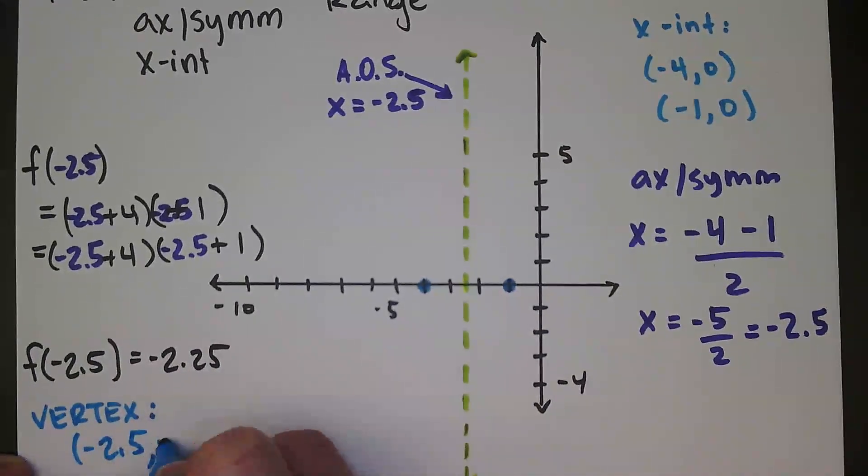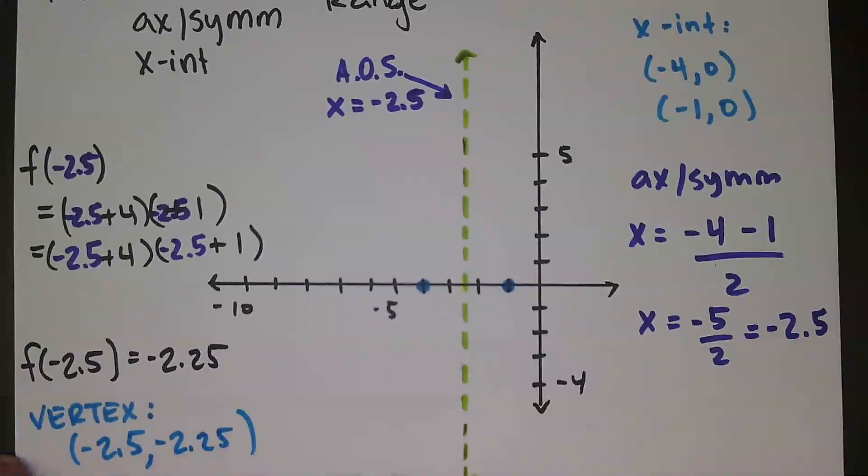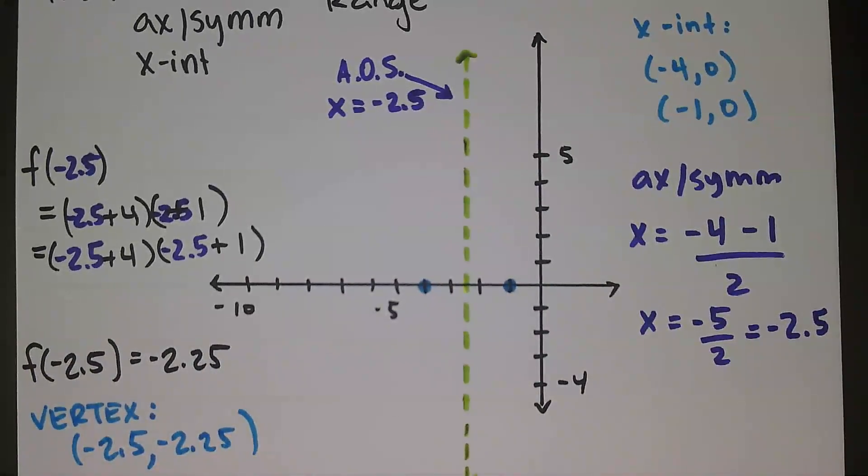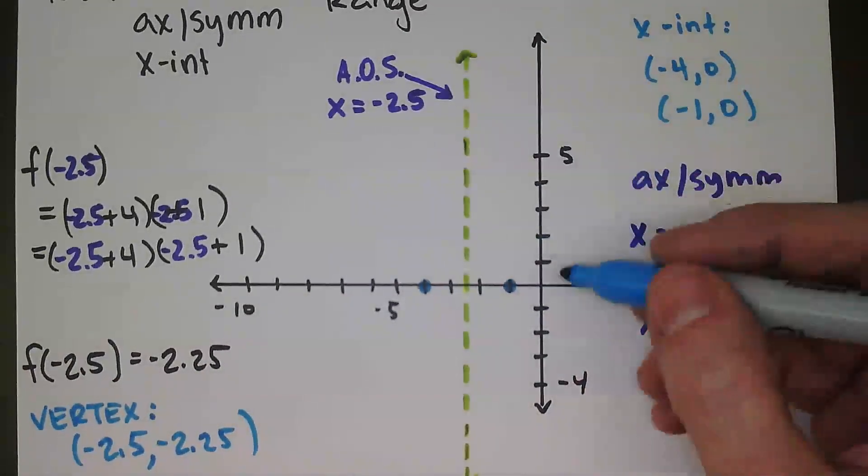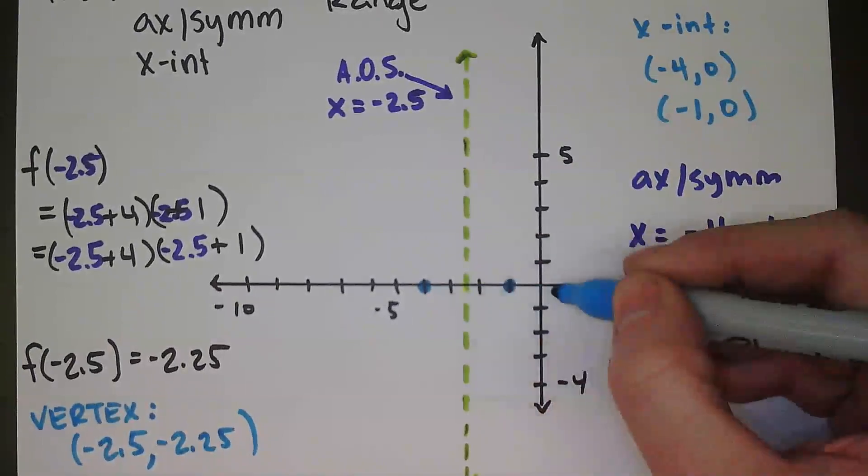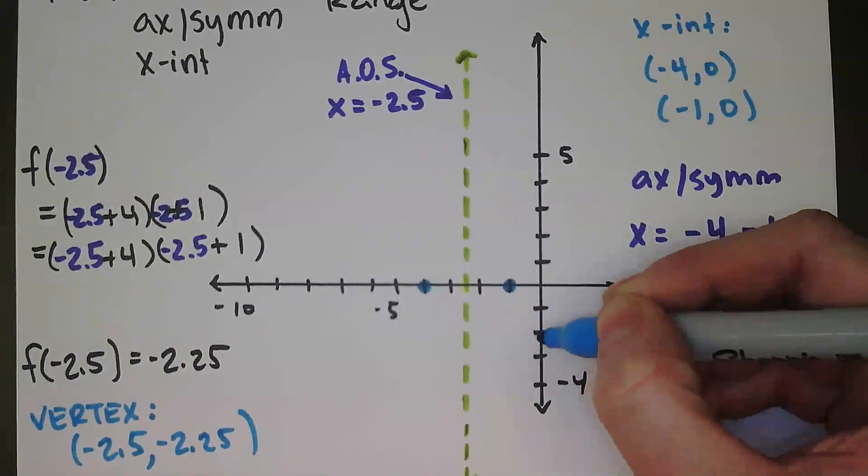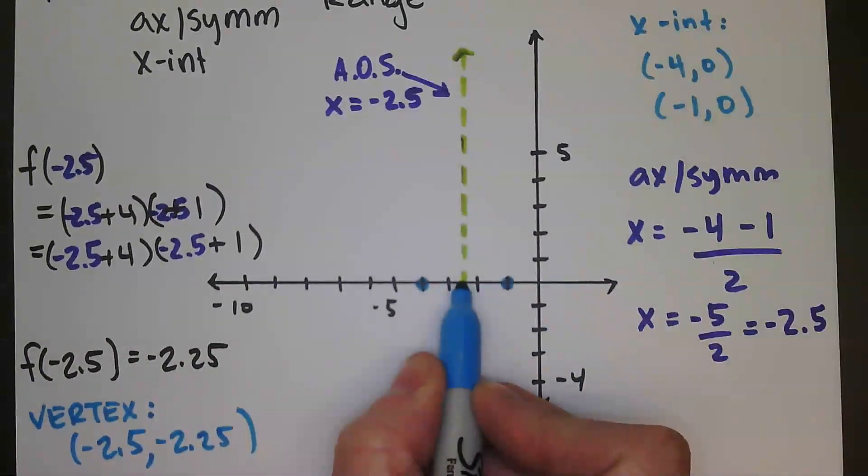My vertex: negative 2.5, negative 2.25. But graphing by hand, sometimes it can get kind of difficult to get this exactly where it needs to be because we have negative 1, negative 2, negative 2.25. But that's okay. We're just going to put it as accurate as we can.